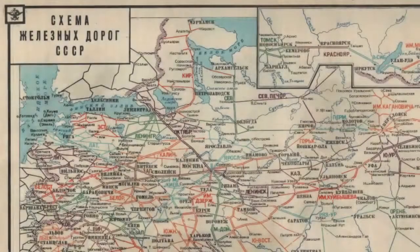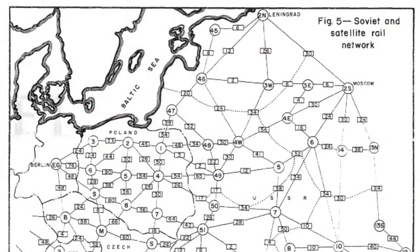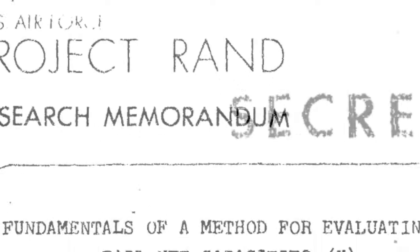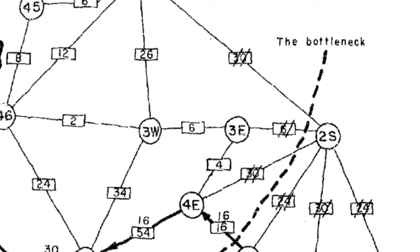In the aftermath of World War II, the Soviet Union and United States studied each other's rail network, with an eye toward disrupting it if necessary. A 1955 paper helped the U.S. figure out where air forces could cause the most damage with the least effort. This was known as the minimum cut problem.